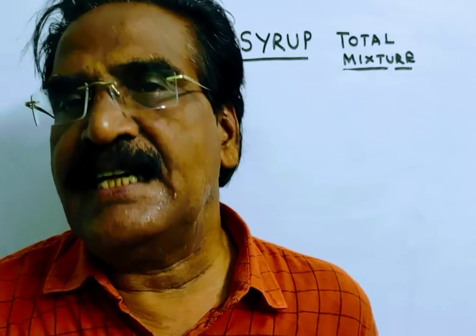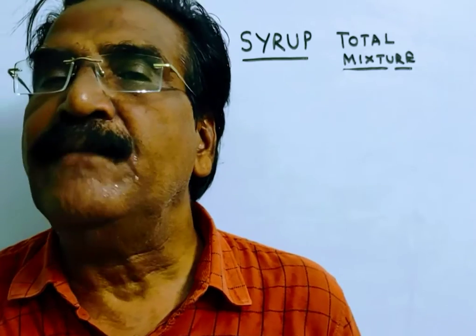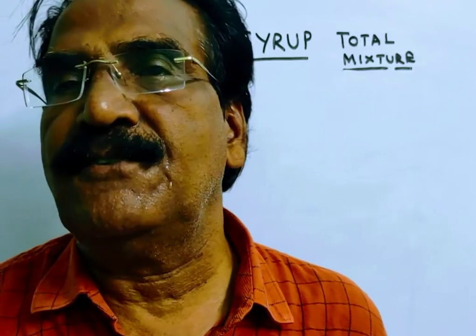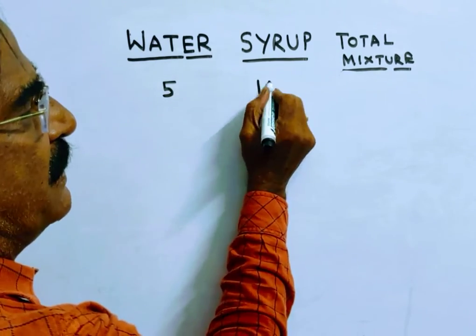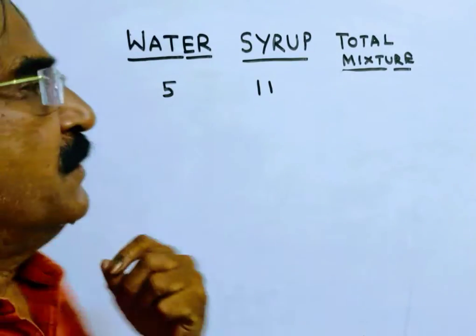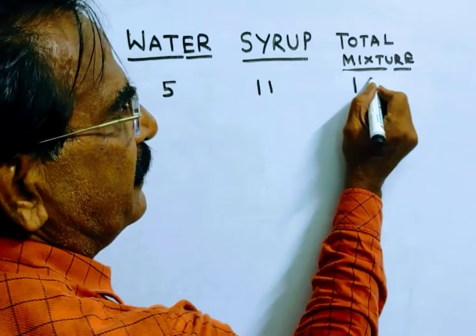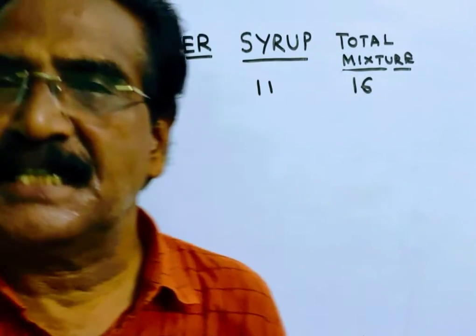A vessel is filled with liquid, 5 parts of which are water and 11 parts are syrup, and the total mixture is 16 parts or 16 liters.